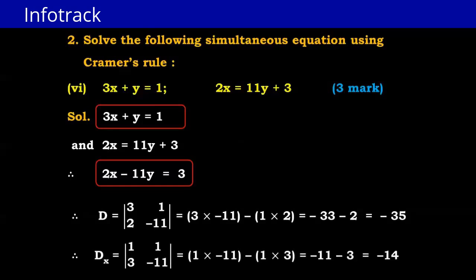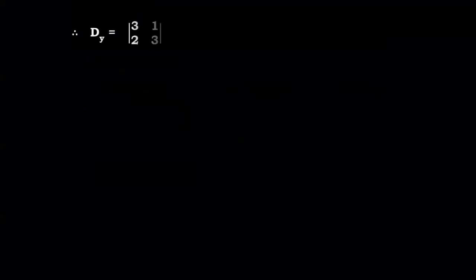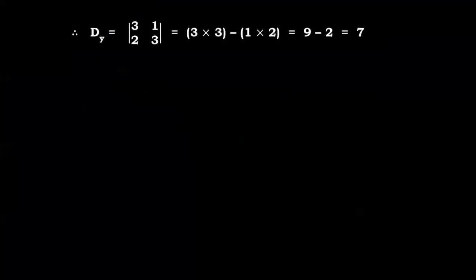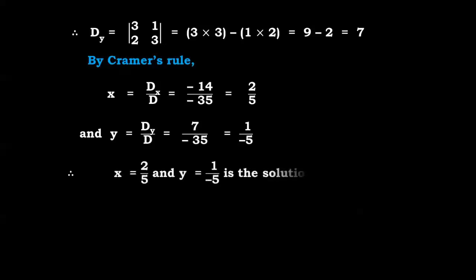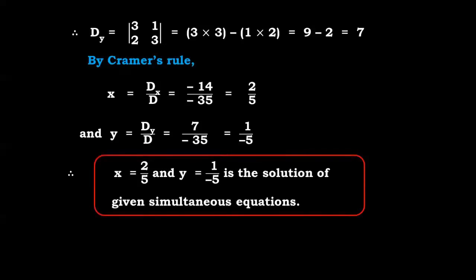For Dx: c1=1, b1=1, c2=3, b2=−11. So Dx = 1×(−11) − 1×3 = −11 − 3 = −14. For Dy: a1=3, c1=1, a2=2, c2=3. So Dy = 3×3 − 2×1 = 9 − 2 = 7. By Cramer's Rule: x = Dx/D = −14/(−35) = 2/5, and y = Dy/D = 7/(−35) = −1/5. Therefore x = 2/5 and y = −1/5 is the solution.